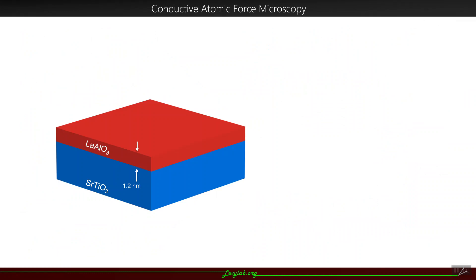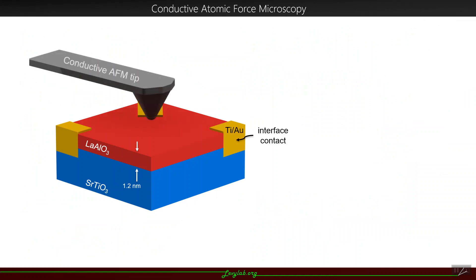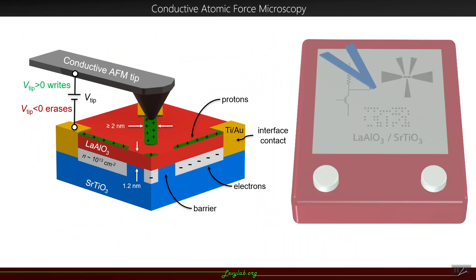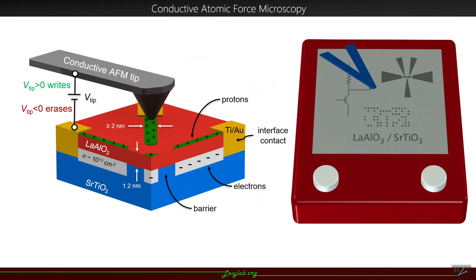First, we grow thin films of LAO on top of STO at the critical thickness, then fabricate contacts to this interface. We then bring a conductive AFM tip into contact with the top of the LAO. When we apply a positive voltage to this tip, we deposit protons on top of the surface, which attract electrons to the interface, locally modulating the metal-insulator transition. When we apply a negative voltage, we effectively remove the protons, erasing the nanostructures that we defined. Using this method, we're able to create structures as small as two nanometers, and it is reversible and reconfigurable — analogous to an Etch-a-Sketch at the nanoscale.